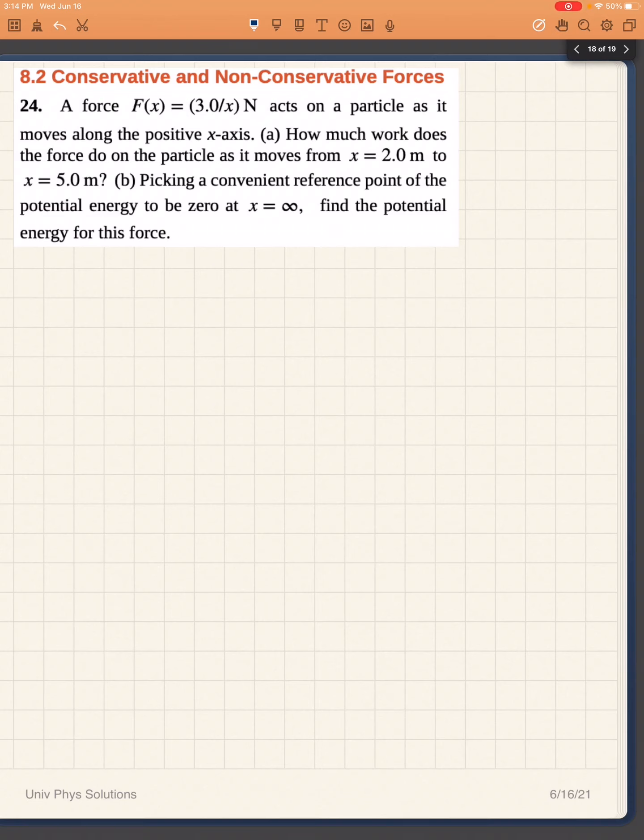Let's work on problem 24 of chapter 8 of OpenStax's University Physics. We're given a force which varies inversely as x, and we are asked to find the work that is done on a particle that moves from x equals 2.0 m to x equals 5.0 m.